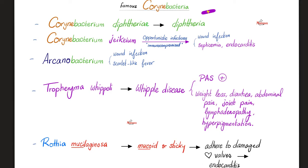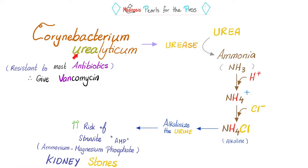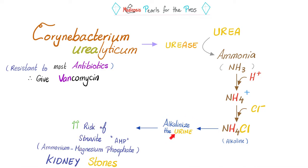Corynebacterium urealyticum is a urease-producing organism. It's going to convert urea — because of urease — into ammonia (NH3). You'll find some protons in the urine; combine with them to make ammonium. Ammonium is positive, thanks to the positive proton, and this positive will combine with a negative chloride to make ammonium chloride, which is an alkaline compound. The alkaline compound will make your urine more alkaline — alkalinization of your urine — when urine becomes alkaline, it increases the risk of stones that precipitate in an alkaline or basic medium.